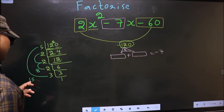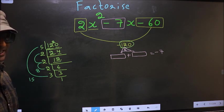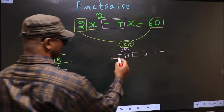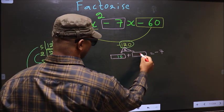15 minus 8 is 7, 15 times 8 is 120. So here we write 15 and here 8.